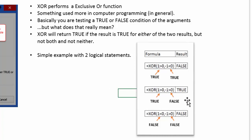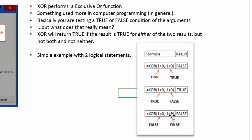So this is an either-or function. Basically all you need is a true output if one of these values is true. For the last example, we're saying if 1 is less than 0 — that's obviously false — and if negative 1 is greater than 0 — that's obviously false. If we put that into the XOR function, that's going to result in a false output.